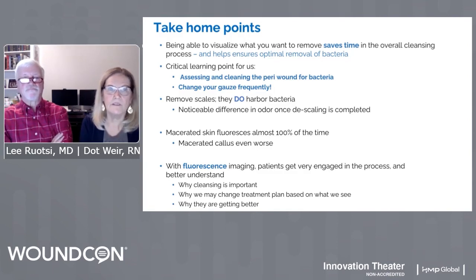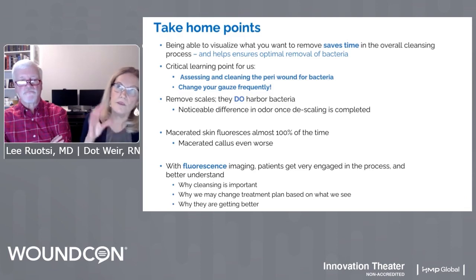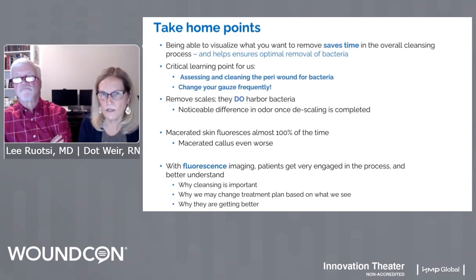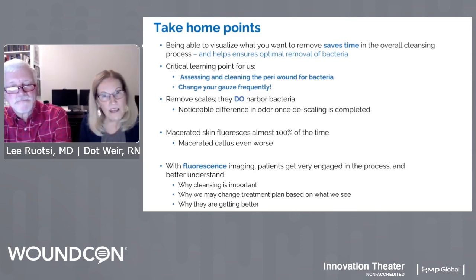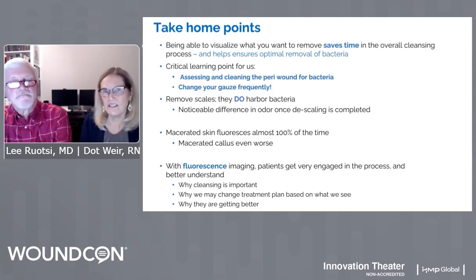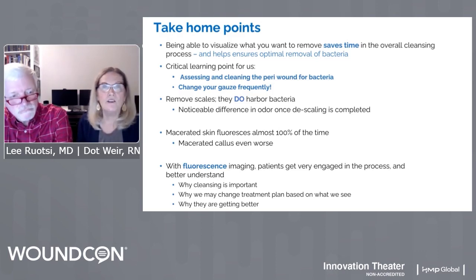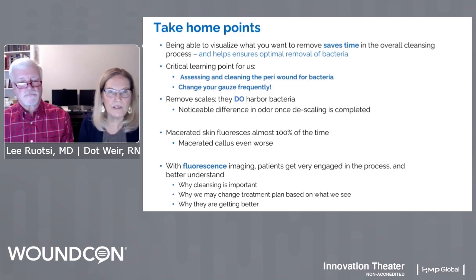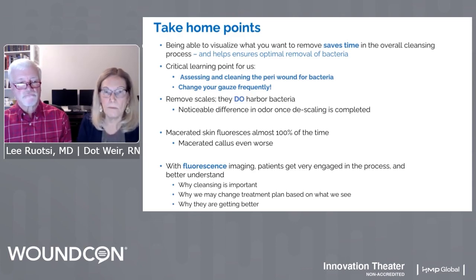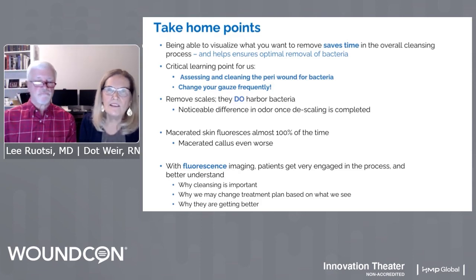Critical learning points: think about the peri-wound and the impact that the wound hygiene concept has made. We want to clean 10 to 20 centimeters around the wound, or at least where the previous dressing was sitting. Change your gauze frequently. Remove scales — we know they harbor bacteria. If we want to treat the skin with a mid-potency steroid ointment or an emollient, do you want to treat scales or do you want to treat skin? Maceration is an evil — it harbors bacteria and fluoresces almost 100% of the time. Good exudate management and protecting the peri-wound skin will help reduce maceration. Your patients will love it — they get engaged in this. It helps them understand when we make treatment decisions and gets them truly involved in their own wound care.